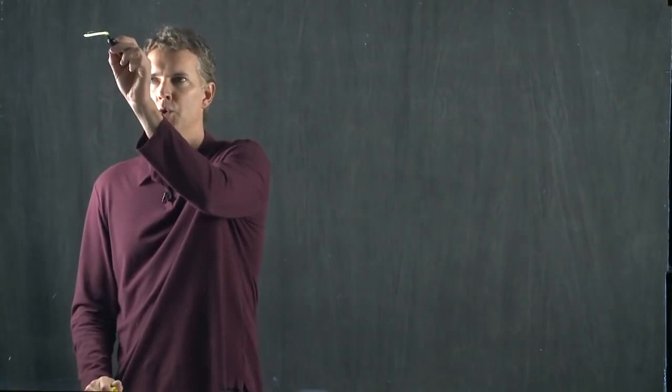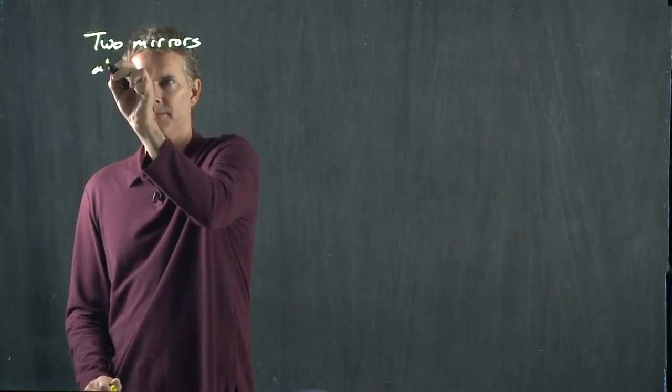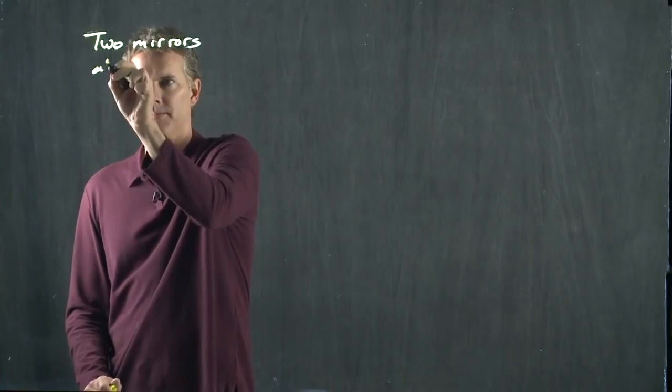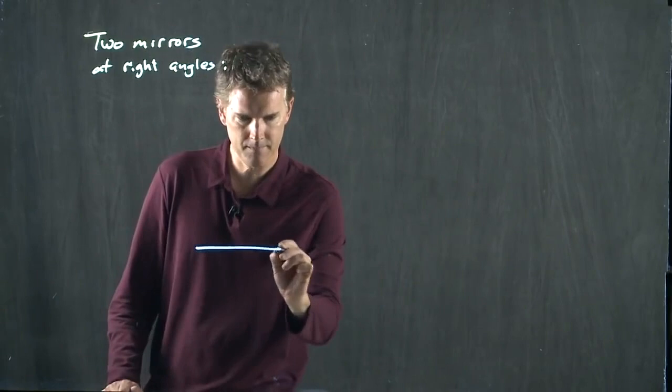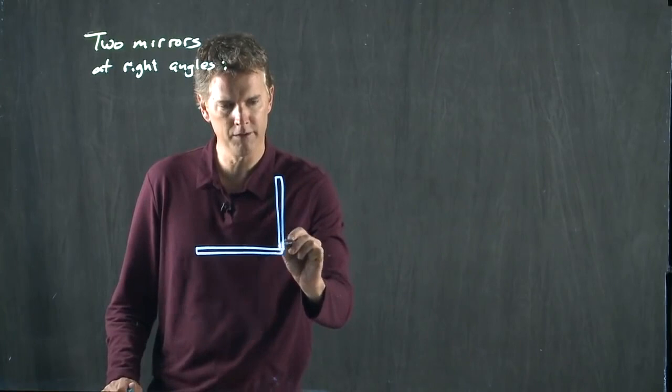But what if we have two mirrors at right angles? Let's take a mirror and let's take a second mirror and put it right next to the first, and we'll put them at right angles to each other. We've made this nice assortment of mirrors here.